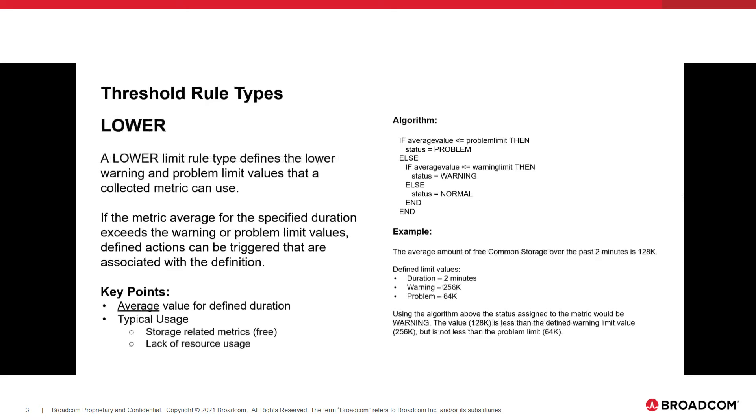The same thing kind of occurs in the opposite direction with lower. Lower is just a lower limit threshold typically used for storage-related metrics or maybe the lack of resource usage, but it's when you want to know when things are getting smaller rather than bigger. The same rules apply as with the upper, though. It's just in the opposite direction. The duration will be used to determine how many intervals are averaged together and then evaluated. So in this case, we're going to say the average amount of free common storage over the last two minutes was 128K.